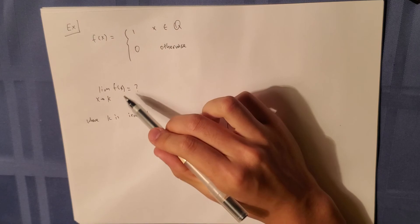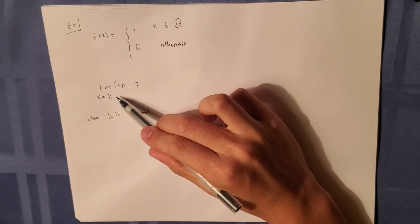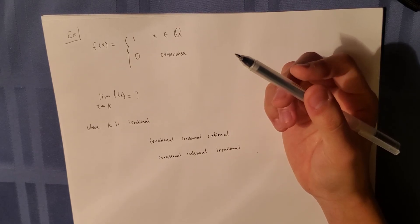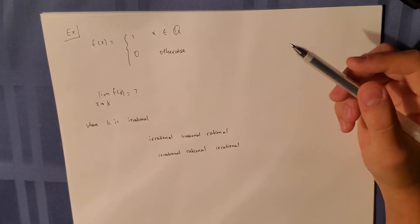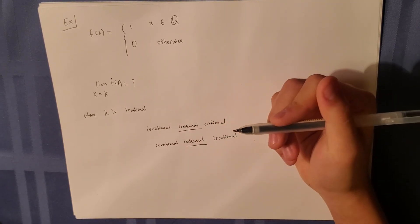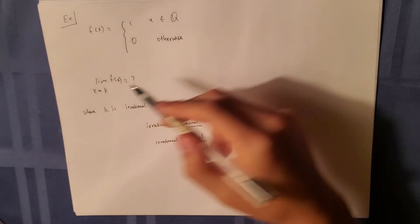So as we approach f of k closer and closer and closer, we don't really know what values we will have. We can either have rational or irrational values as we get closer to x approaching k.